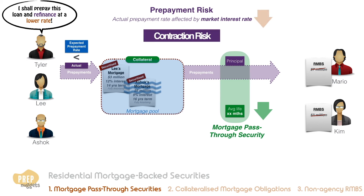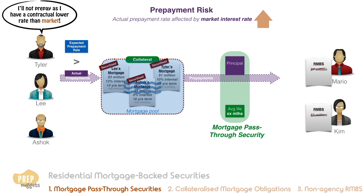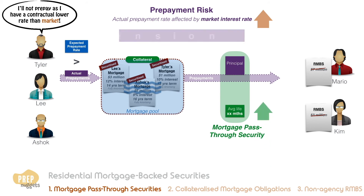In contrast, when market interest rates rise, prepayments will be lower than forecasted because homeowners are reluctant to give up the benefits of a contractual interest rate that now looks low. As a result, the security will have a longer maturity than was anticipated. This is known as extension risk.